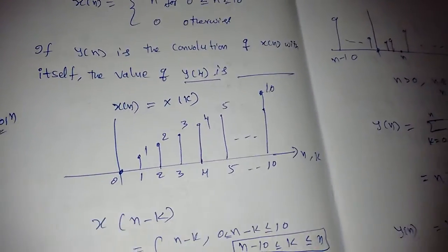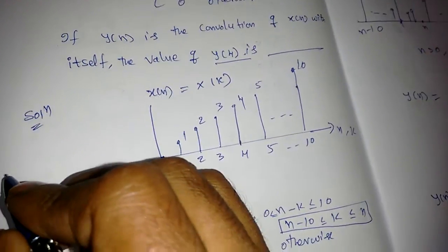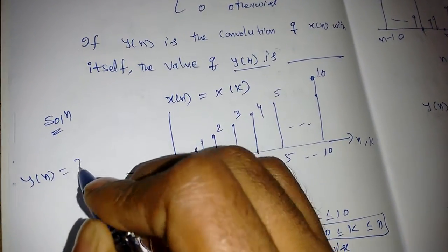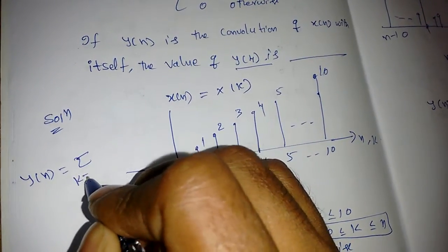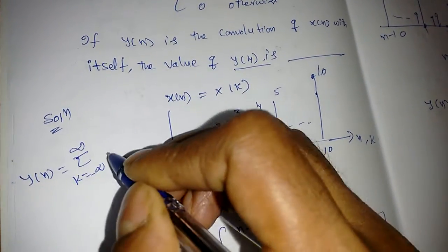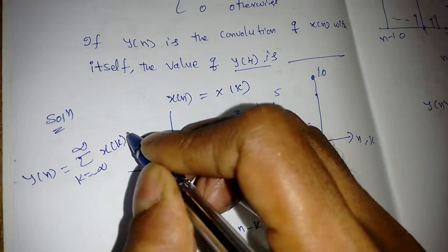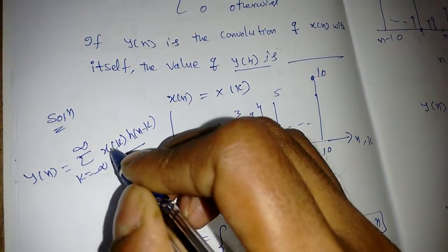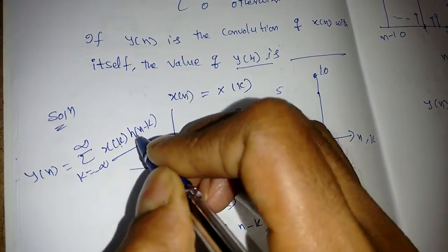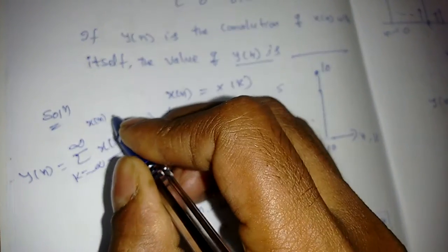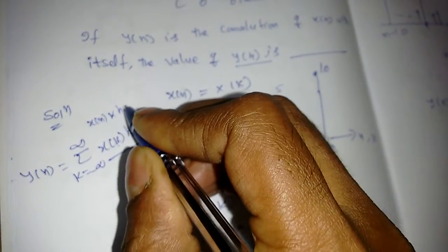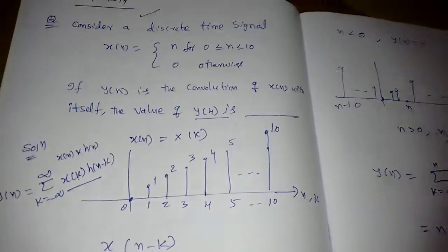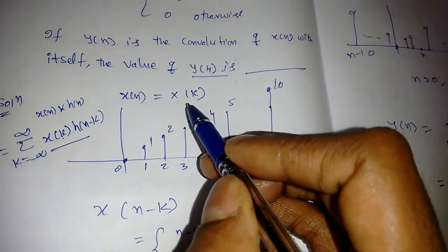The procedure is the same. The convolution sum is y[n] = Σ x[k]·h[n-k], where k goes from -∞ to ∞. Here both x[k] and h[n] are the same signal x[n], so the procedure remains the same.